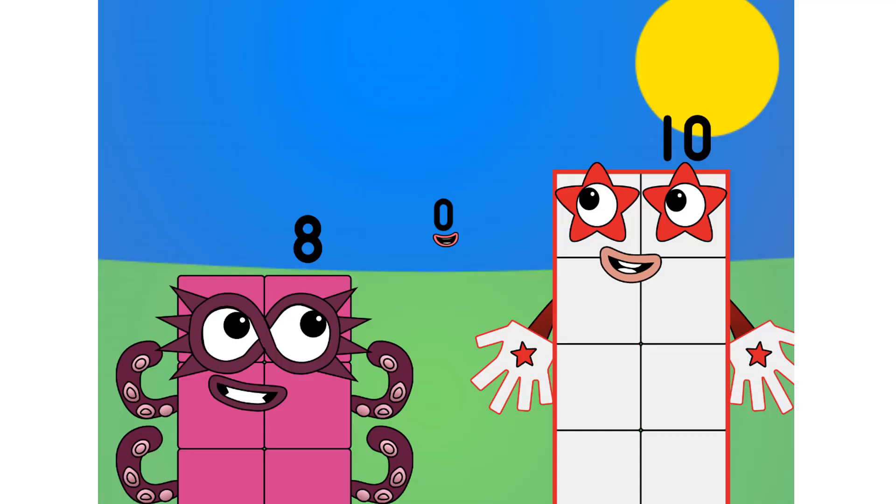8, do you know why we count up to 10? No. Well, the main reason why we count to 10 is because humans have 10 fingers, 5 on each of their 2 hands. 1, 2, 3, 4, 5,